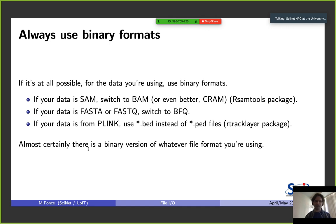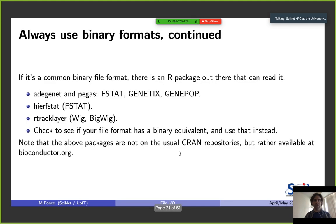For bioinformaticians: if you have SAM files, switch to BAM or better CRAM using the Rsamtools package. If you have FASTA or FASTQ, BFQ are your friends. If you have data from PLINK, use VCF instead of PED. These are the binary counterparts of ASCII formats. In R it's easy — load data in its original format and save it as Rdata or RDS, which already gives you an advantage.